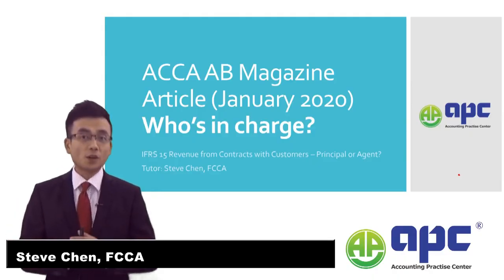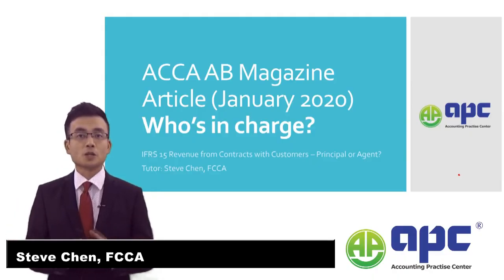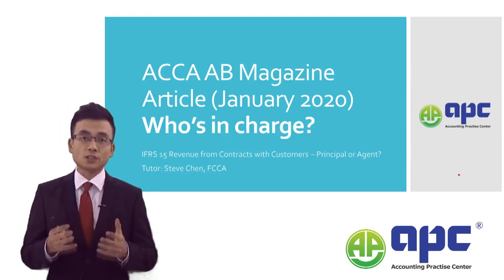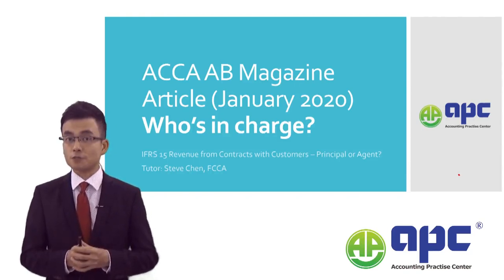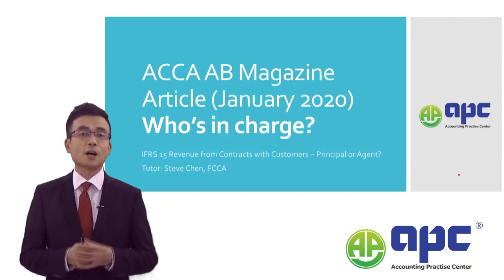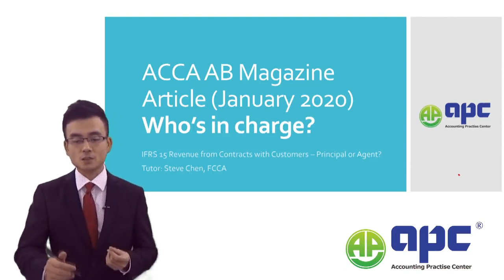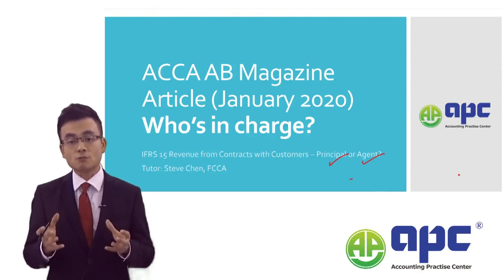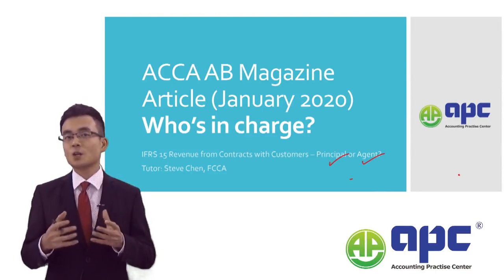In January 2020, I submitted an article to the ACCA AB Magazine to discuss the revenue recognition standard, which is IFRS 15, and to identify whether a business would be acting as the principal or agent, because the revenue recognized by the principal or agent will be quite different.